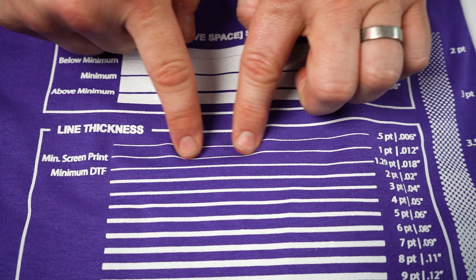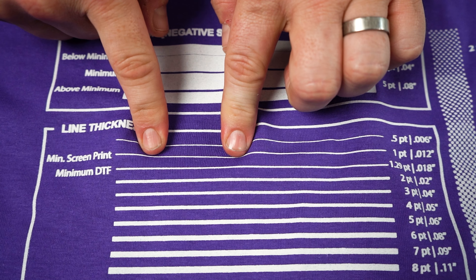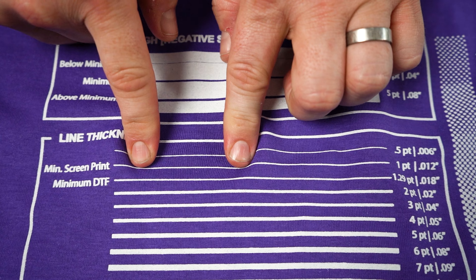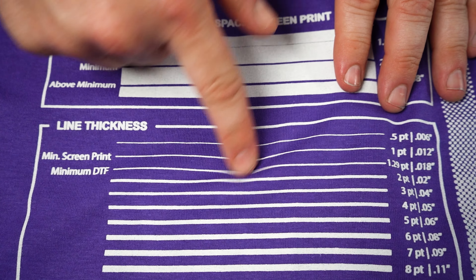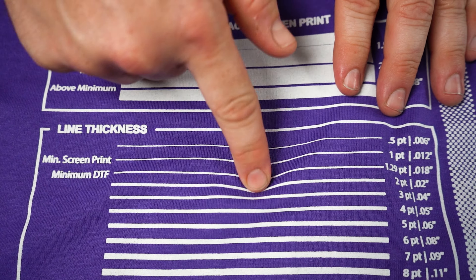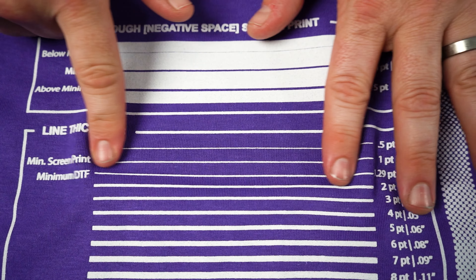Now for our Goofproof screen printed transfers, let's start with the minimum line weight — that's going to put us right at one point or 0.012 inches, the screen printing industry standard. You can see here for our 0.5 point line, it looks pretty good printed and it did in fact print. However, we may run into some durability issues where it's not going to meet that standard of 50-plus wash-dry cycles that we have all of our transfers independently tested for.